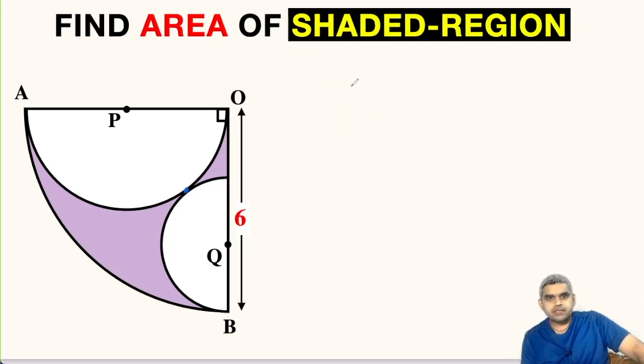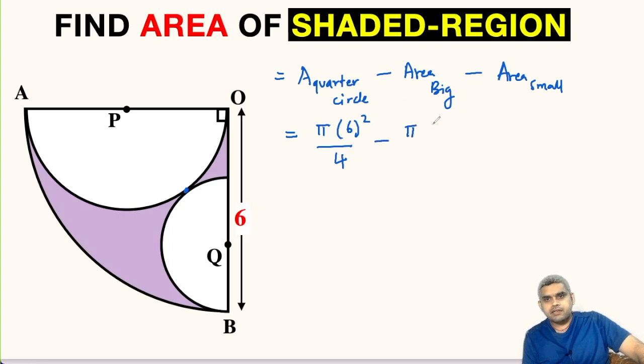Area of this shaded region will be equal to the area of quarter circle minus area of this big semicircle minus area of this small semicircle. Area of quarter circle will be π times its radius squared, that is 6² upon 4. Area of big circle will be π times radius squared upon 2 because it is a semicircle.